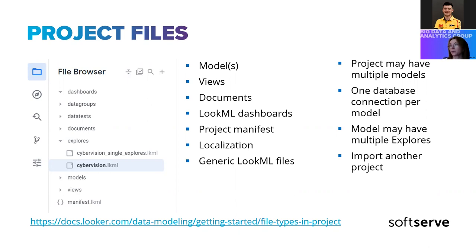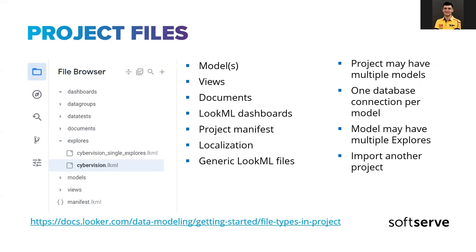Another type is the LookML dashboard. In Looker you can have two types of dashboards: user-defined dashboards, where you drag and drop what you need to see using UI tools, and LookML dashboards. Your user-defined dashboard can actually be converted — you can take the LookML code from the dashboard and save it as part of your project, in which case it will be versioned as part of the project.